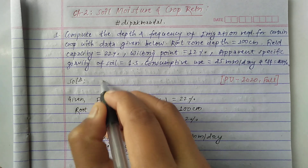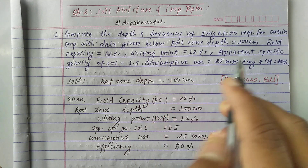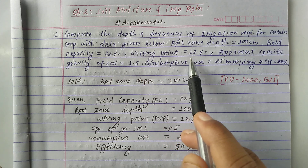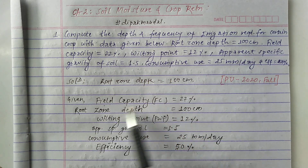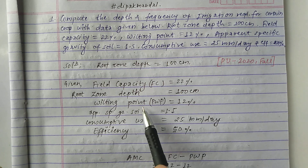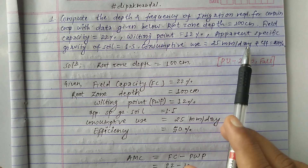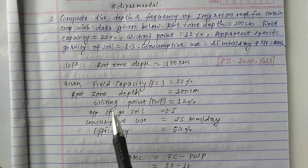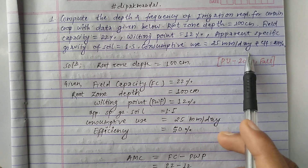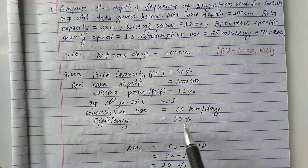Let's write the given data: root zone depth = 100 cm, field capacity = 22%, wilting point (PWP) = 12%, apparent specific gravity of soil = 1.5, consumptive use = 25 mm per day, and irrigation efficiency = 50%.